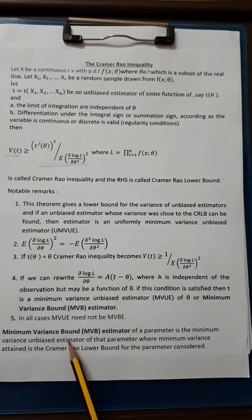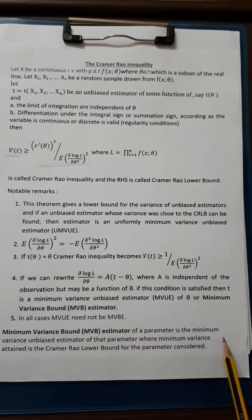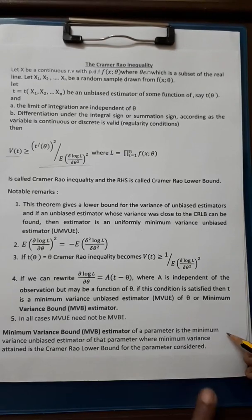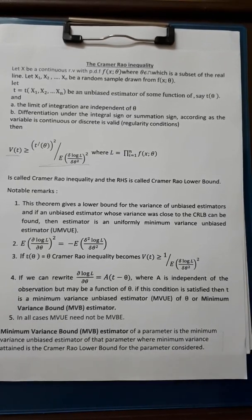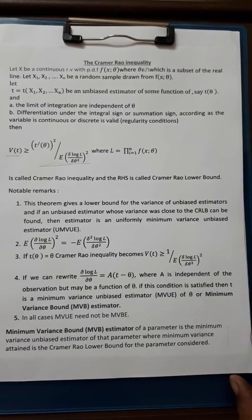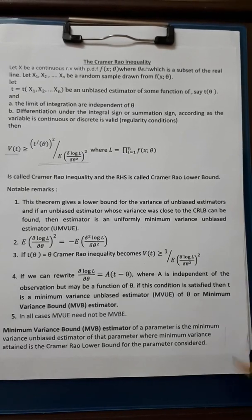The Minimum Variance Bound Estimator of a parameter is the Minimum Variance Unbiased Estimator of that parameter where minimum variance obtained is the Cramér-Rao lower bound for the parameter considered. This is for one line answer.